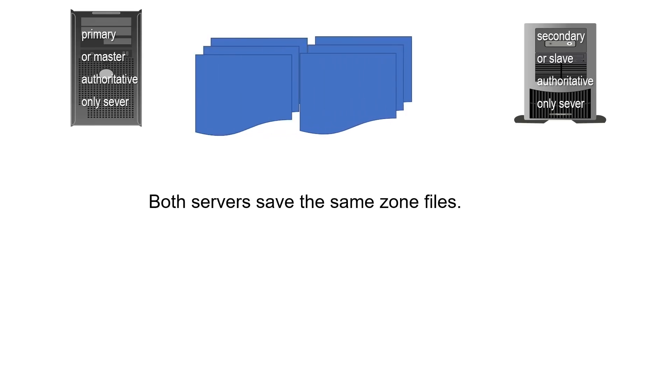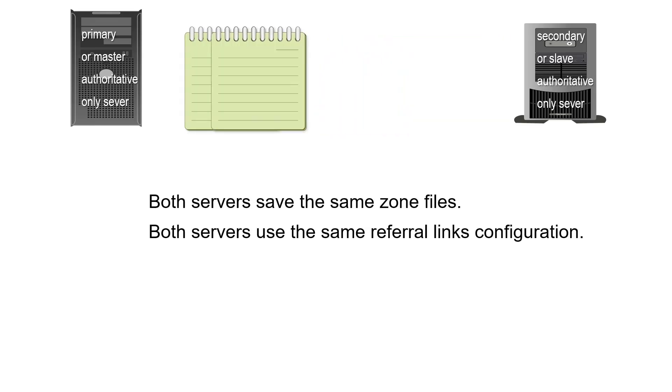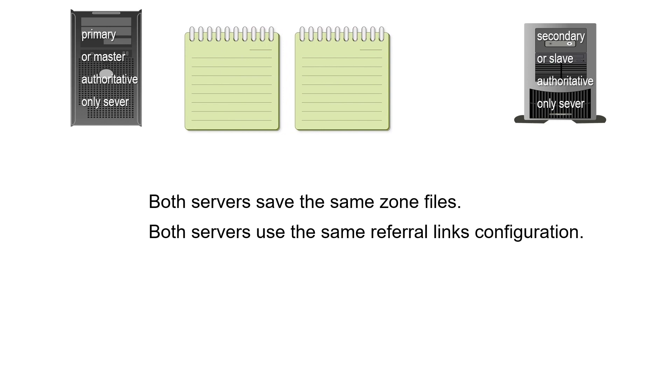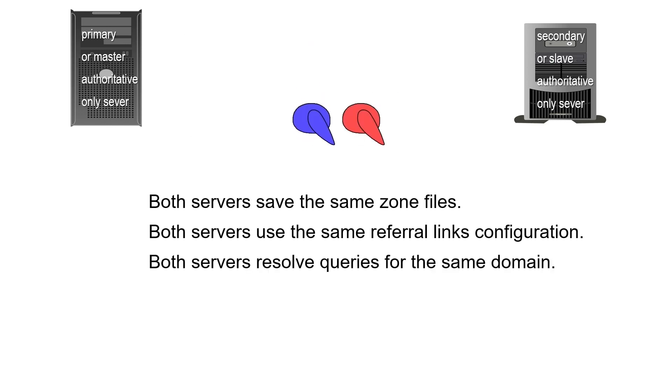Both primary and secondary servers save the same zone files, use the same referral links configuration, and resolve queries for the same domain.